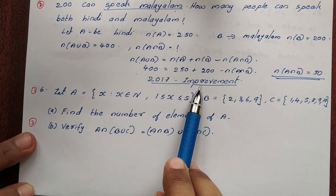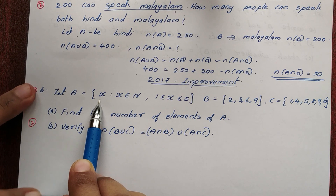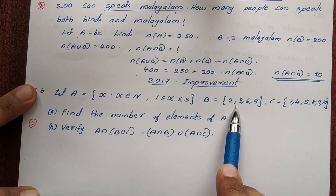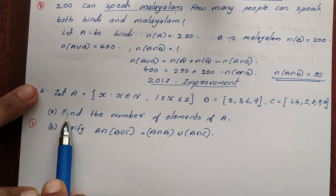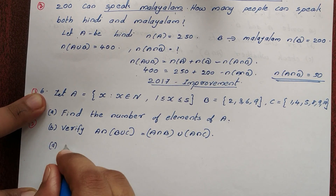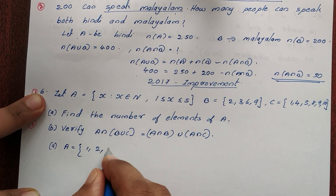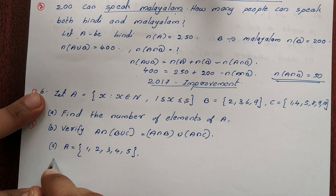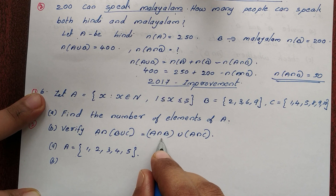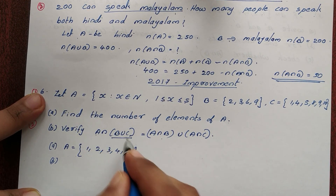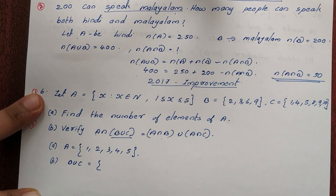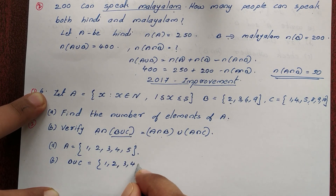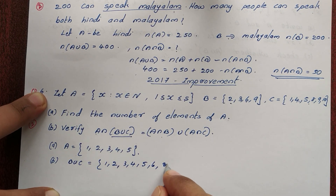Next, 2017 Improvement question, sixth question. Let A = {x : x ∈ N, 1 ≤ x ≤ 5}, B = {2, 3, 6, 9}, C = {1, 4, 5, 8, 9, 10}. Find the number of elements of A. A = {1, 2, 3, 4, 5}. Then B union C = {1, 2, 3, 4, 5, 6, 7, 8, 9, 10}.